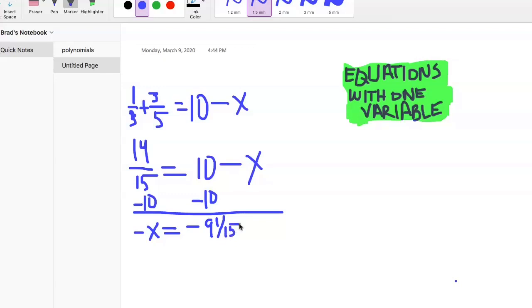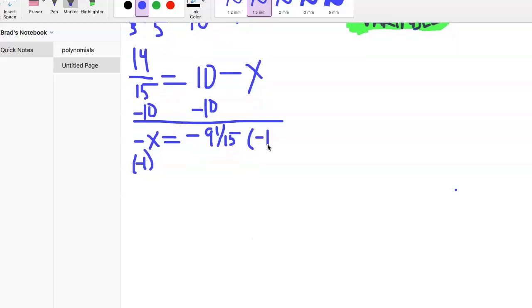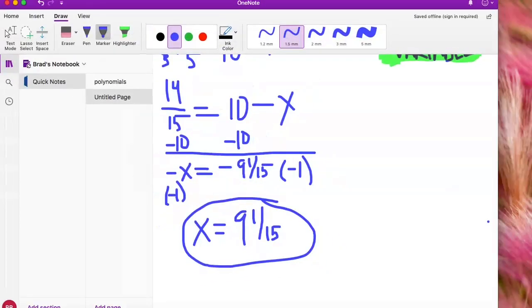All we need to do now is we need that x to be positive. We need to multiply each side by negative 1, and that leaves us with x equals 9 and 1-fifteenths. Multiplying by that negative switches the sign, negative times a negative is a positive, and we're left with x equals 9 and 1-fifteenths.